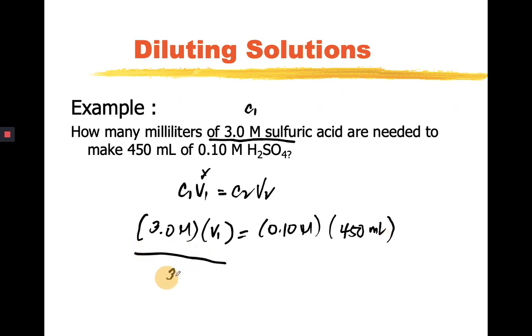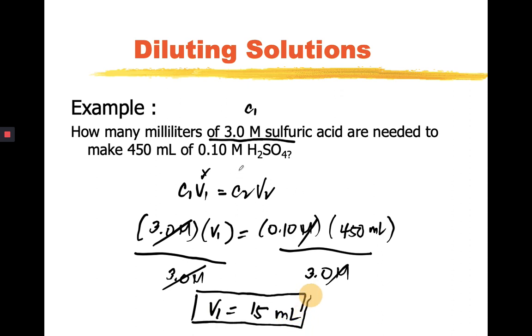If you want to get V1, we divide this whole equation with 3.0. You see how molars get canceled out, and we are left with V1 is equal to 0.10 times 450 divided by 3.0. I should be getting an answer of 15 ml. Meaning I get 15 ml from the 3.0 molar sulfuric acid solution and then dilute it. Add water such that the whole solution will have a volume of 450 ml.